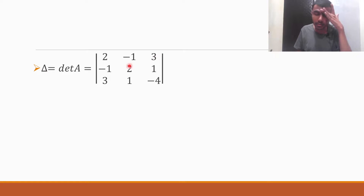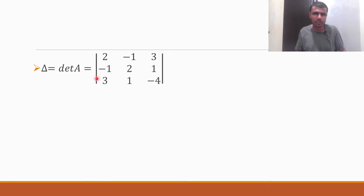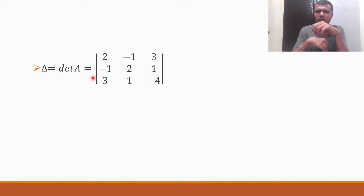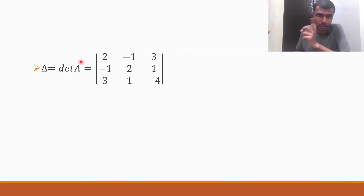Determinant of A is nothing but this. These are square brackets — square brackets represent a matrix and straight ones represent a determinant. Now I'm going to find out the determinant along the first row. So: 2 into the determinant of — just cut off the row and column in which 2 is there.